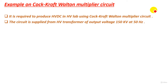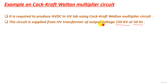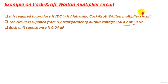The circuit is supplied from a high voltage transformer. The output of the high voltage transformer is 150 kilovolts at 50 hertz — so 50 hertz is the supply frequency and 150 kilovolts is the secondary voltage of the high voltage transformer. Each unit capacitance is 0.04 microfarad. Also, the load current which passes in the insulator or the test object is 6.12 milliampere.